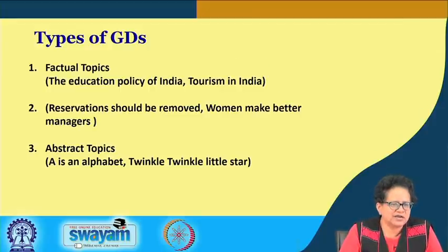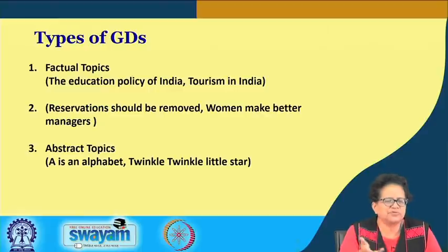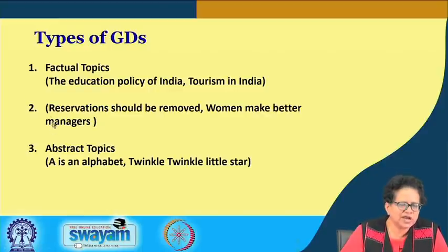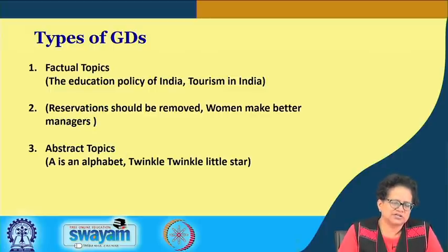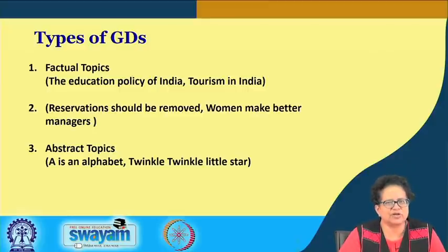Now let us examine the types of GDs. As per the topics, there are two types. First, factual topics — for example, the education policy of India, tourism in India, whether reservations should be removed, or whether women make better managers. Second, abstract topics — such as 'A is a letter in the alphabet,' '1 plus 1 makes 11,' or 'Twinkle Twinkle Little Star.'